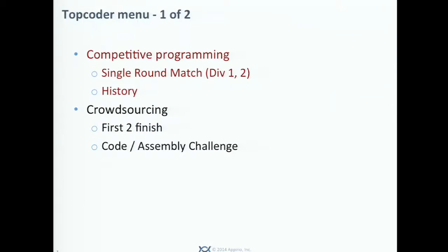The competitive programming area is a place to compete on how fast you solve algorithm problems correctly. There are real-time matches called Single Round Match and Marathon Match, but first you can try your skill in the problem history area. You should start with Division Two and choose the easiest problem with 200 points. Once you solve the problem, you can see other members' solutions and learn from them. If you'd like to work in a global company like Google, Facebook, or Amazon, this is the right place to improve your programming skills, because in the interviews of these companies you will be asked to solve such algorithm problems.